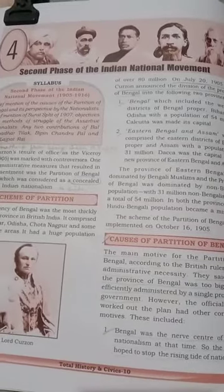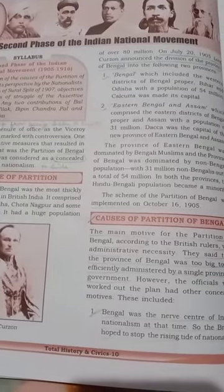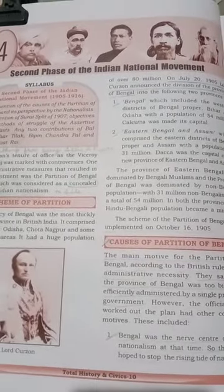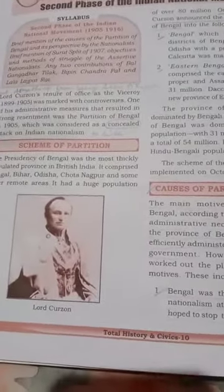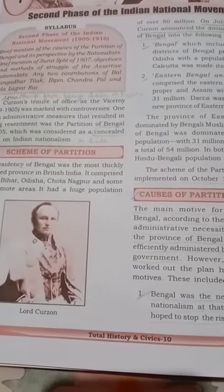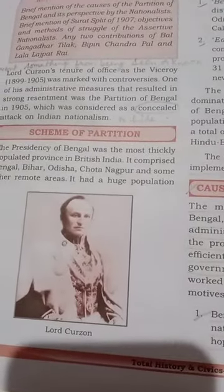Good morning, students of class 10. Today we'll discuss history chapter 4 - the second phase of the Indian National Movement, led during 1905 to 1916. This movement was led mostly by the assertive nationalists. Here we'll discuss about Lord Curzon's controversial scheme of partition of Bengal and its causes. So let's begin for better understanding of this lesson.